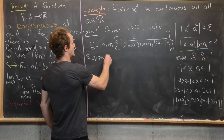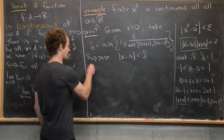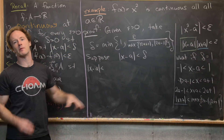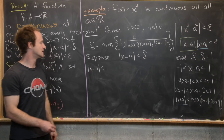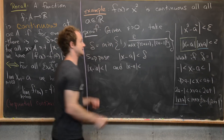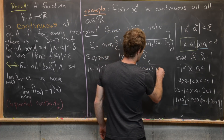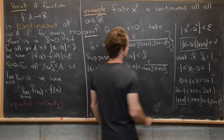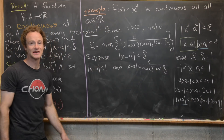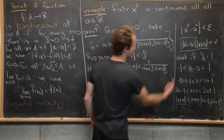Suppose |x − a| < δ. Since δ is the minimum of two quantities, this means both: |x − a| < 1, and |x − a| < ε / max(|2a + 1|, |2a − 1|). Setting δ equal to the minimum really gives us this 'and' statement involving both bounds.